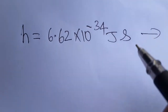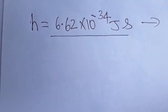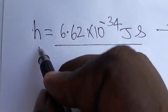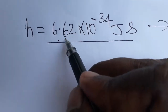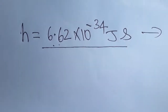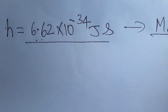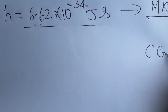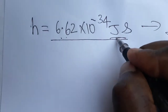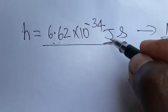Hello friends, today we are going to discuss Planck's constant in the CGS system. Planck's constant h is equal to 6.62 into 10 power minus 34 joule second in the MKS system. We are going to convert it to CGS, so the unit will be erg second.